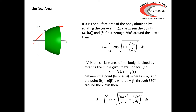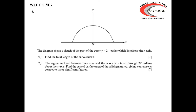The formulae for arc lengths and surface areas are given in the formula booklet — make sure you know where to find them. So let's now have a look at a couple of examples. The first one comes from the 2012 paper and we're considering the length of the curve y = 2 − cosh x which lies above the x-axis.